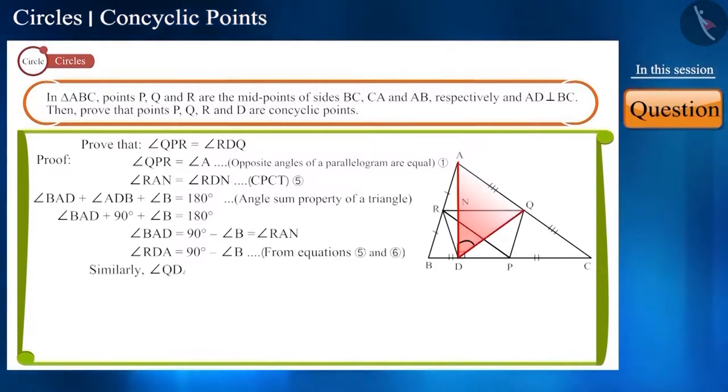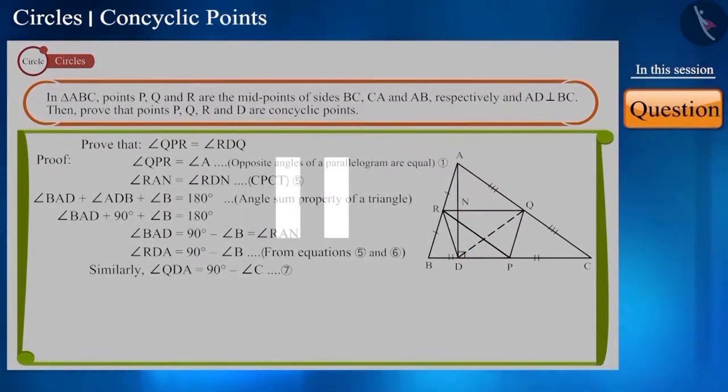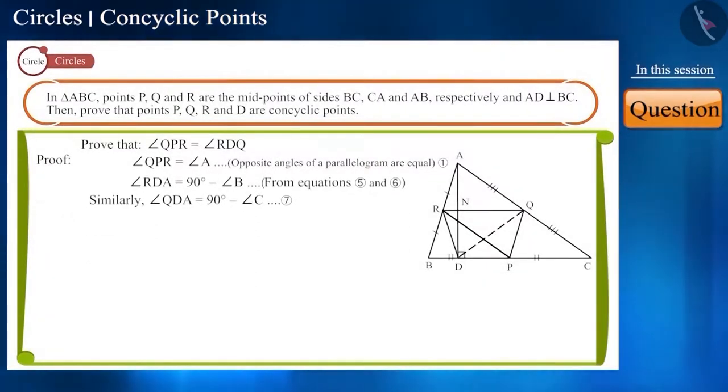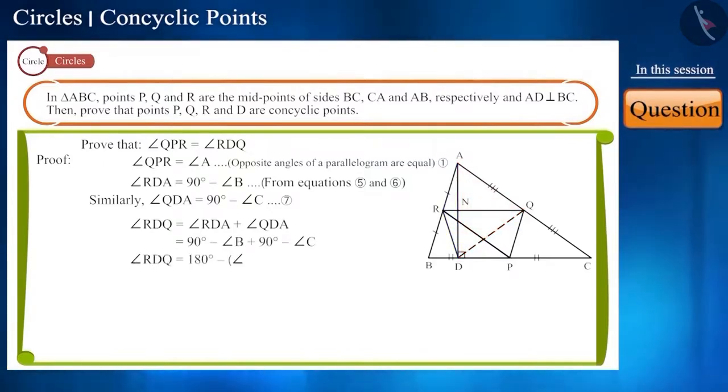Similarly, we can obtain angle QDA to be equal to 90 degrees minus angle C. Pause the video and obtain it yourselves. According to the figure, we will write angle RDQ as angle RDA plus angle QDA. And now, we will substitute the measure of angle RDA and angle QDA in this equation and simplify it like this.